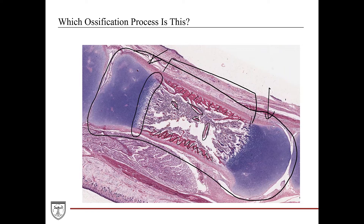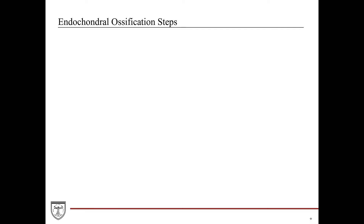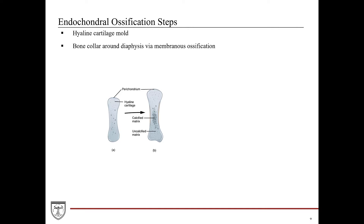Overall, this image is depicting the process of endochondral ossification. There are a number of steps that take place in it. First, we start with a hyaline cartilage mold in the shape of the future bone, just on a really small scale. And true to hyaline cartilage, it is surrounded on the outside by the perichondrium — that supporting, dense irregular connective tissue with vasculature. Now, surrounding the future diaphysis, a thin layer of bone tissue will deposit, which we call the bone collar.